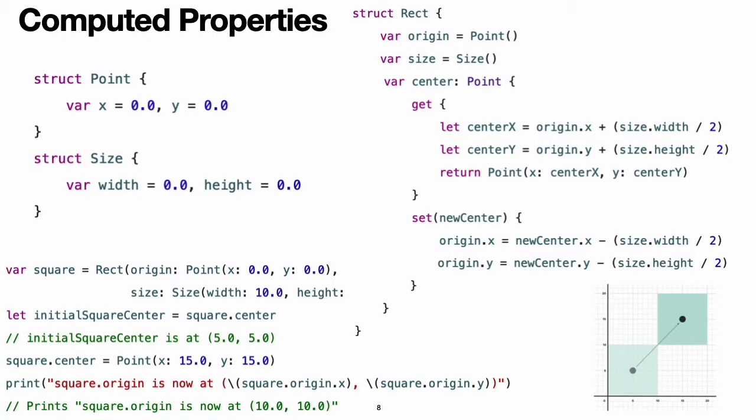Computed properties: in addition to stored properties, classes, structures, and enumerations can define computed properties, which do not actually store a value. Instead, they provide a getter and an optional setter to retrieve and set other properties and values indirectly. This example defines three structures for working with geometric shapes.